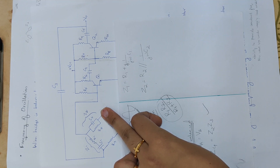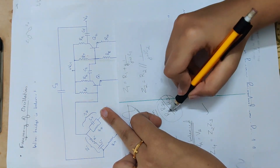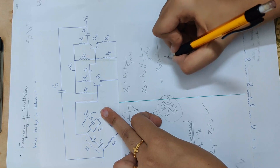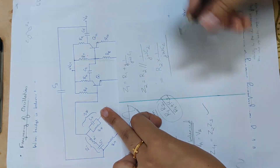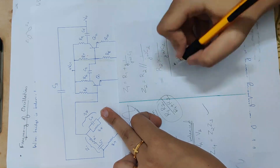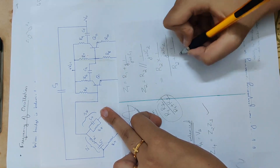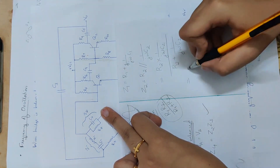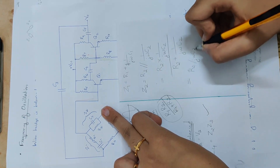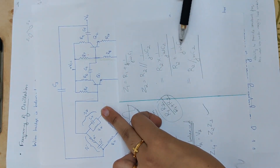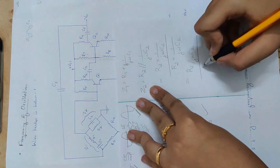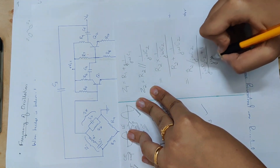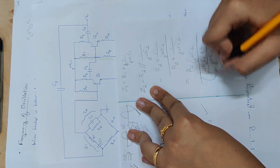Z2 is R2 and C2 in parallel combination. The parallel impedance is R2 in parallel with reactance 1/(jωC2), giving R2 × (1/(jωC2)) divided by R2 + 1/(jωC2). Simplifying the denominator: (jωR2C2 + 1) divided by jωC2.